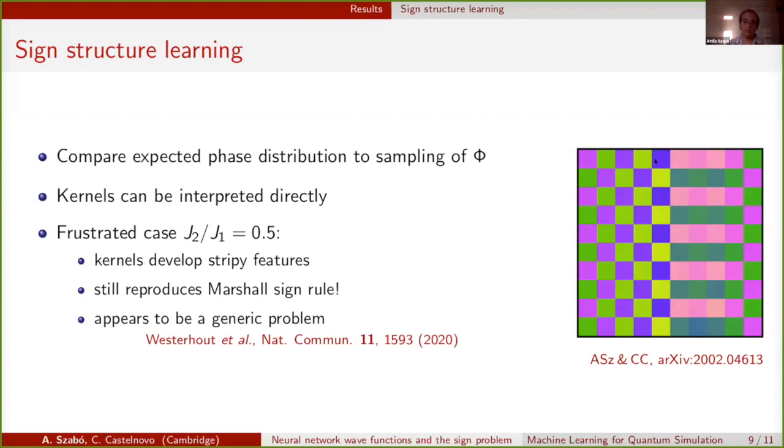Now if we go to the frustrated case, we see that the kernels are developing both of the checkerboard features consistent with the Néel order and also stripy features that are consistent with the other ordered phase. This could in principle be a sign that it's learning the competition between these two sign structures. But unfortunately, if we then go back and sample the phases, we see that they still reproduce the Marshall sign rule. On the one hand, this appears to be a generic problem that frustrated sign structures are very hard to learn, as it is discussed in this paper.